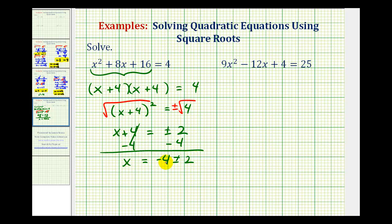But now we do need to perform this addition and subtraction. So one solution would be x equals negative 4 plus 2, which is negative 2. Or negative 4 minus 2, which is equal to negative 6. So we have two real rational solutions to the given equation.